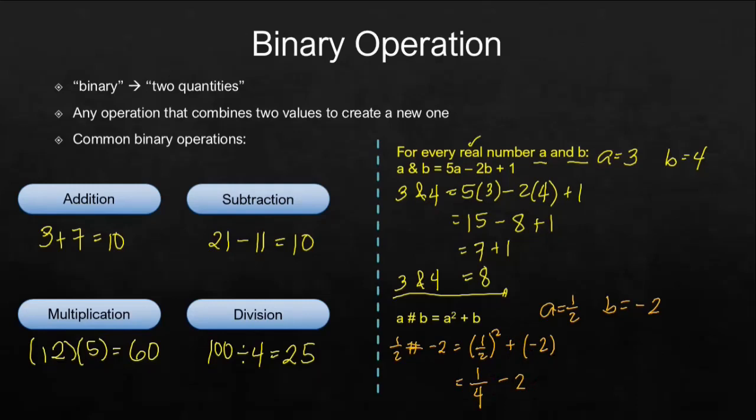And then we will use subtraction of fractions. So we have here 1 fourth minus 2. This is over 1. Getting their LCD is 4. This is 1. 4 divided by 4 is 1 times 1, it's 1. And then 4 divided by 1 is 4 times 2, that is 8. So minus 8. And finally, 1 minus 8 is negative 7 over 4.